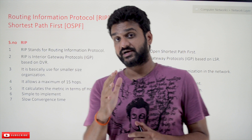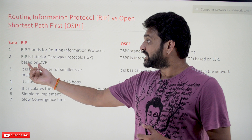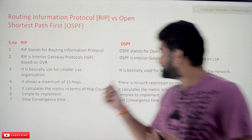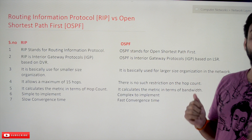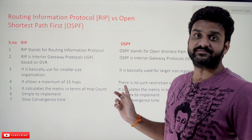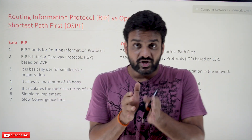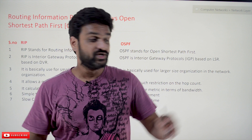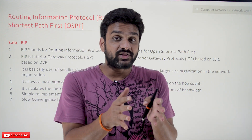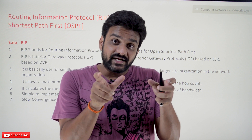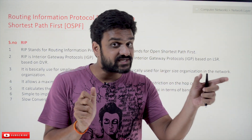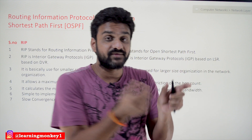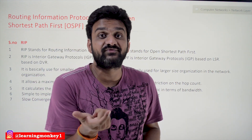RIP is an interior gateway protocol based on DVR — Distance Vector Routing. OSPF is an interior gateway protocol based on LSR — Link State Routing algorithm. DVR and LSR are routing algorithm concepts, implemented by RIP and OSPF respectively. Distance Vector Routing is implemented using the Bellman-Ford algorithm, and Link State Routing is implemented using Dijkstra's algorithm.